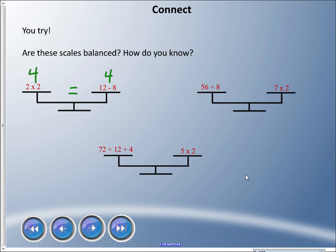All right, 56 divided by 8 is 7, 7 times 2 is 14. Do those balance? No they do not balance, and by the way that's the sign for it does not equal. Here's a problem. Well, I'm going to do some math. 72 divided by 12 is 6 plus 4 is 10. 5 times 2 is 10. That indeed balances.